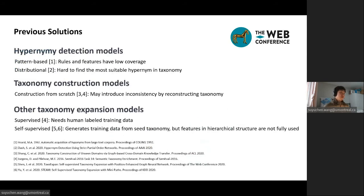Previous solutions for taxonomy expansion include these three types. First, hypernymy detection models, either pattern-based or distributional, are hard to find the most suitable hypernym in the taxonomy. Taxonomy construction models construct a taxonomy from scratch, and may introduce inconsistency by reconstructing the taxonomy. Other taxonomy expansion models include supervised methods that need human-labeled training data. Self-supervised methods emerged in these two years, generating training data from the seed taxonomy, but features in the hierarchical structure are not fully used.